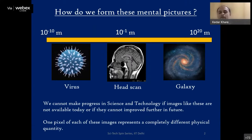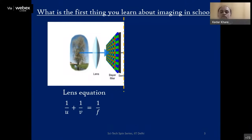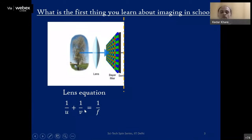Let me take a step back and start from what you learn in textbooks. In high school, you must have seen the lens equation for imaging. Let's put it in the context of mobile phone cameras. The lens equation is 1/U + 1/V = 1/F, where U is the distance between the scene and the lens, V is the distance between the lens and the sensor, and F is the focal length.